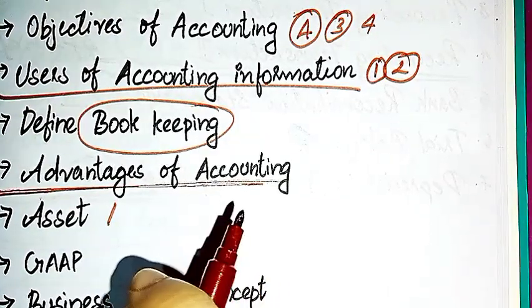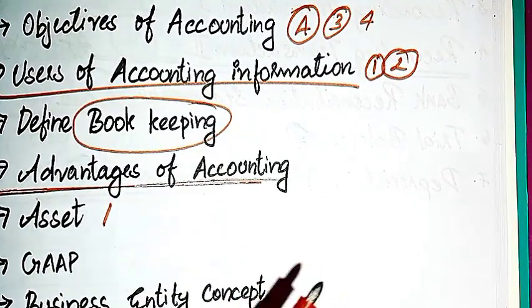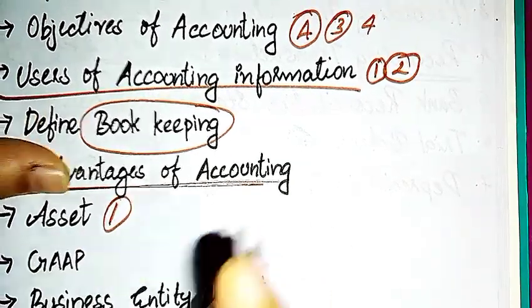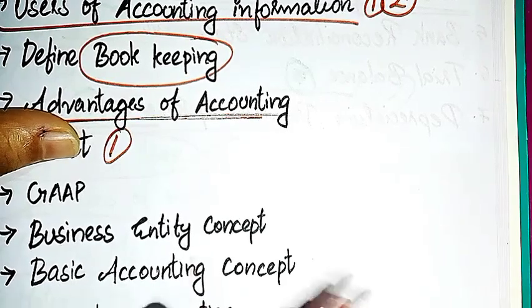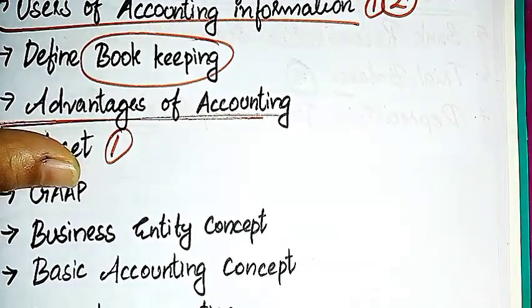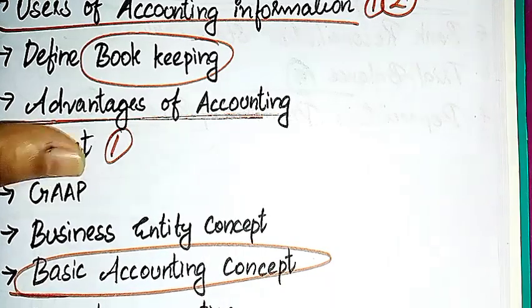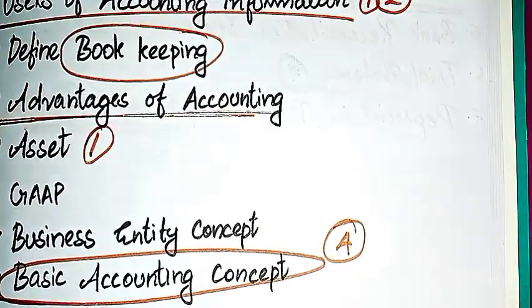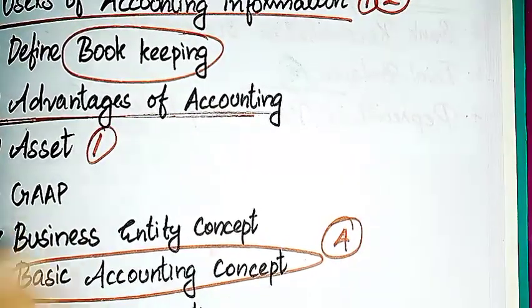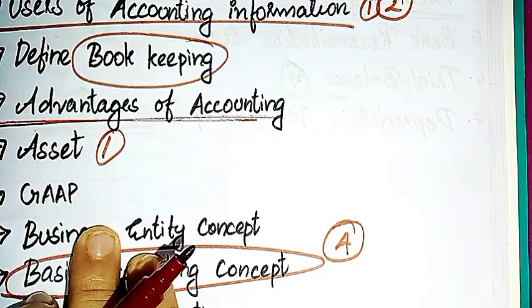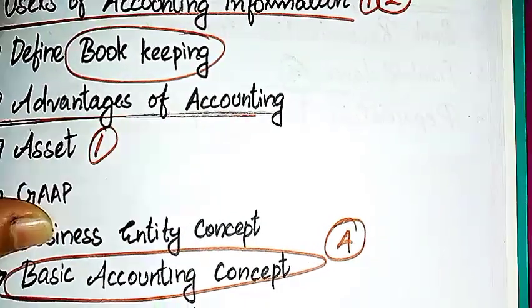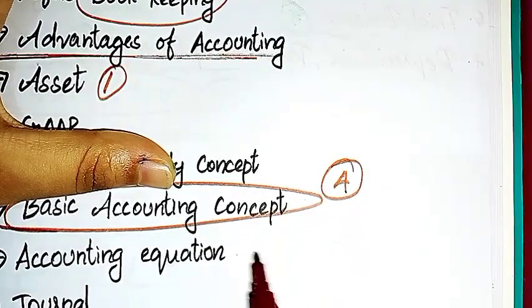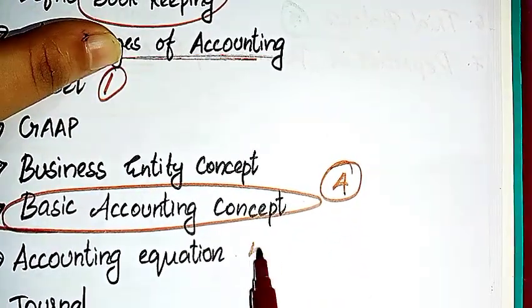You need to know fixed and current assets, tangible and intangible assets. Then GAAP - Generally Accepted Accounting Principles. Basic accounting concepts you need to learn include money measurement, business entity, and dual aspect concepts.